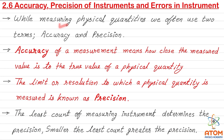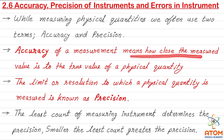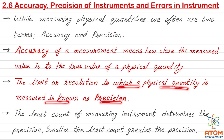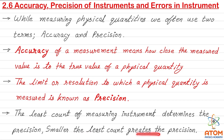While measuring physical quantities, we use two well-known terms: accuracy and precision. Accuracy means how close the measured value is to the true value of the physical quantity. The limit or resolution to which a physical quantity is measured is known as precision. The least count of a measuring instrument determines the precision — smaller the least count, greater the precision.